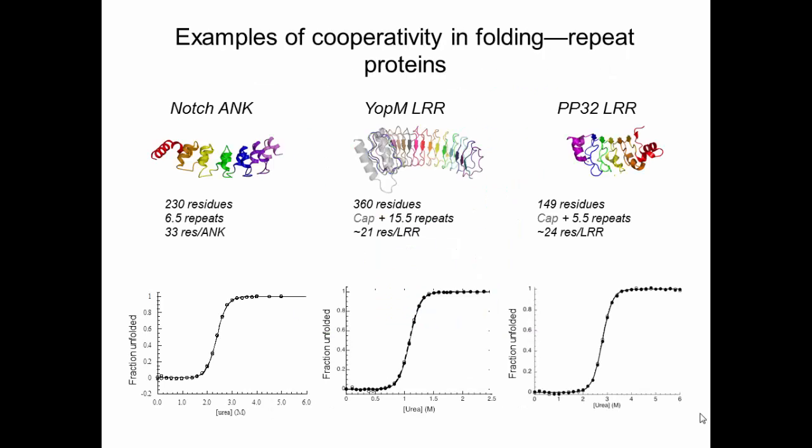For a number of years we've learned that linear repeat proteins, such as the ankyrin domain from the Notch receptor and leucine-rich repeat proteins as shown here, fold by equilibrium all-or-none reactions. Three folding transitions are shown here, where we measured fraction folding by circular dichroism, measuring alpha helix, and by tryptophan fluorescence. We see sharp all-or-none transitions in each of these cases.